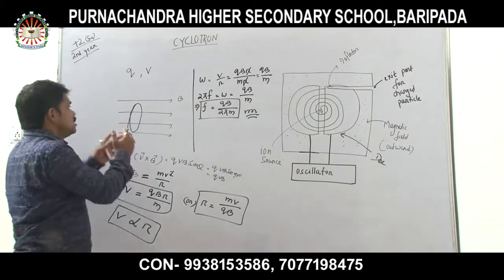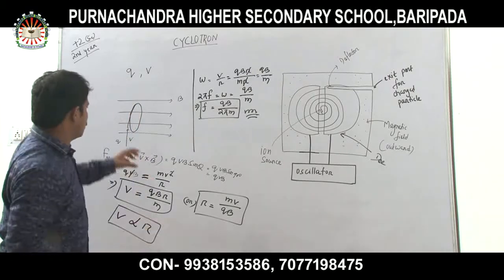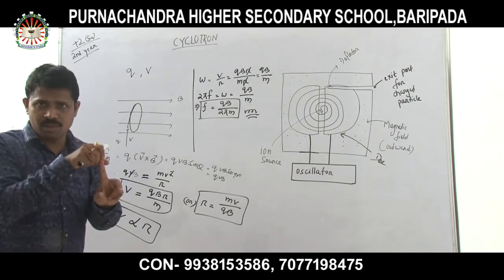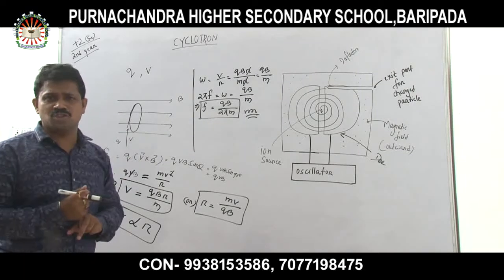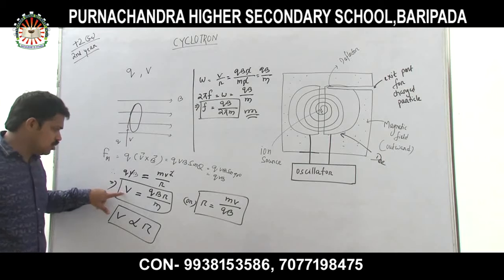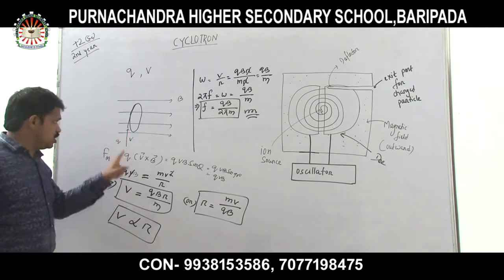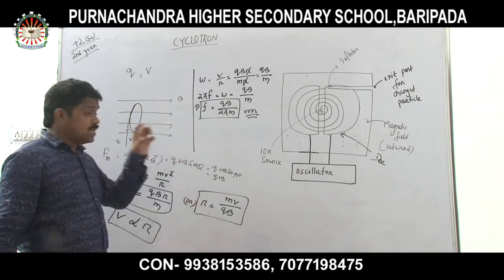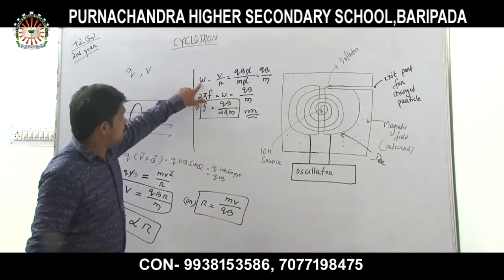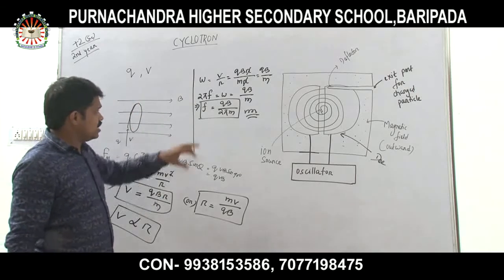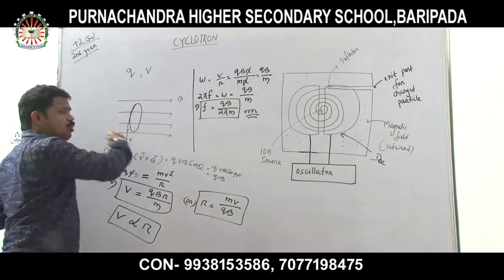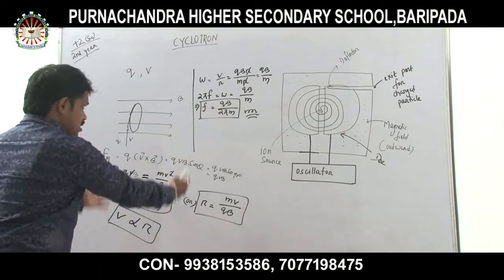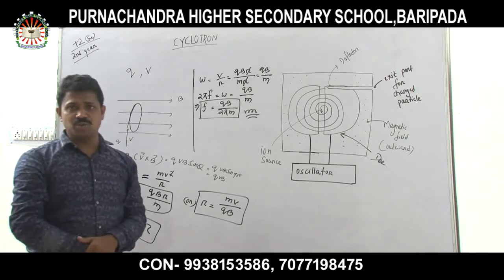So summarizing: when a charged particle with velocity V enters the magnetic field perpendicularly, first, the path becomes circular. Second, the velocity is V = QBR/M. Third, the radius is R = MV/QB. Fourth, the angular velocity is ω = QB/M. And lastly, the frequency of rotation is F = QB/(2πM). With this principle, the cyclotron is designed.